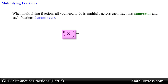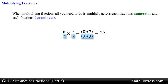When multiplying fractions, all you need to do is multiply across each fraction's numerator and each fraction's denominator. In this case we multiply the numerators 8 and 7, which is equal to 56, and we multiply the denominators 3 times 3, obtaining 9. In essence, you place the product of the numerator over the product of the denominator.